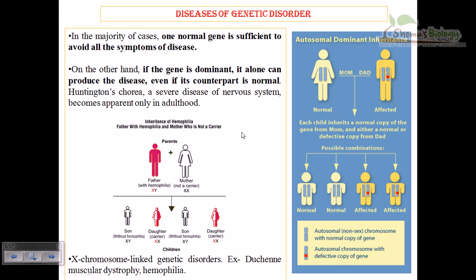On the other hand, if a gene is dominant, it alone can produce the disease even if one normal copy is present. For example, Huntington's chorea is a severe neurodegenerative disease of the nervous system that becomes apparent only in adulthood. You can see here how Huntington's chorea transfers from one generation to another.